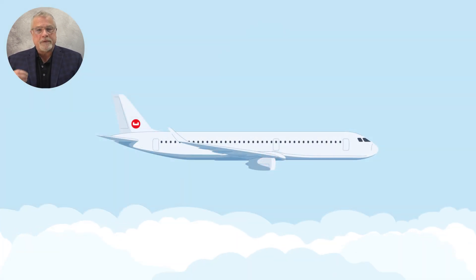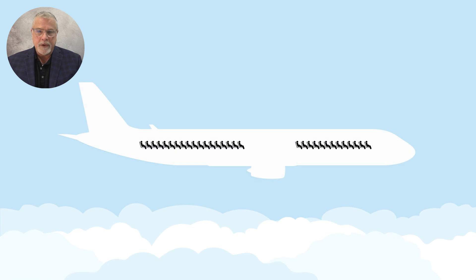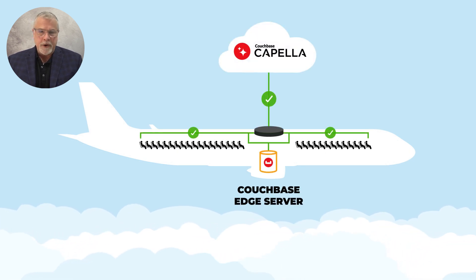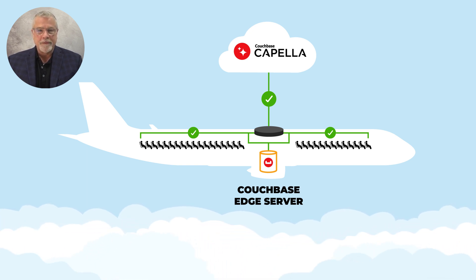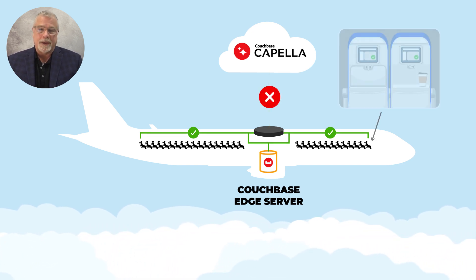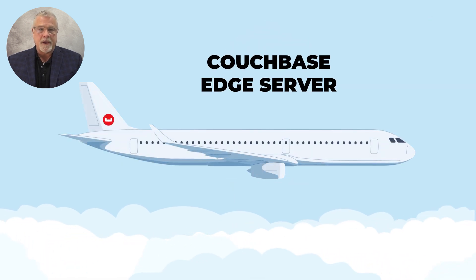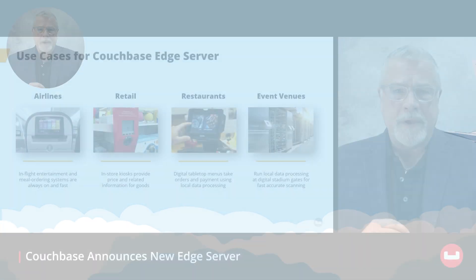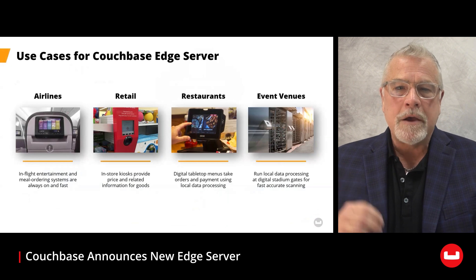This is where Couchbase Edge Server comes in. Edge Server was designed specifically to serve these types of edge environments, where app clients require a database server, but the internet is too unreliable to use the cloud and local infrastructure is just too small to run one locally. Edge Server's small footprint and built-in data synchronization is the perfect solution for this airline use case. Now, if the internet connection slows or is interrupted entirely, passengers still enjoy a fast and reliable ordering experience thanks to Couchbase Edge Server. Airlines can use Edge Server to power in-flight seat-back apps without the worries and hassle of internet connectivity.